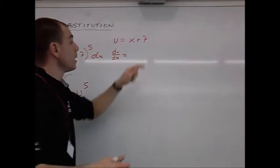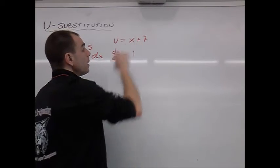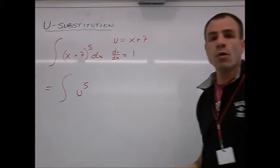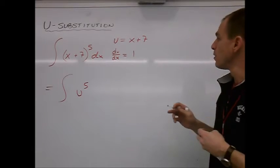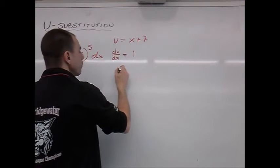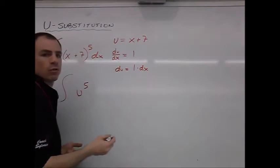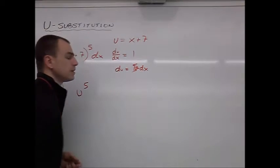What's the derivative of x plus 7? Exactly. It's just 1. x goes to 1, and 7 derives to 0. So du dx is equal to 1. Now, if we just move that dx over to the right side, what we now have is du is equal to 1 times dx. Du is equal to dx.